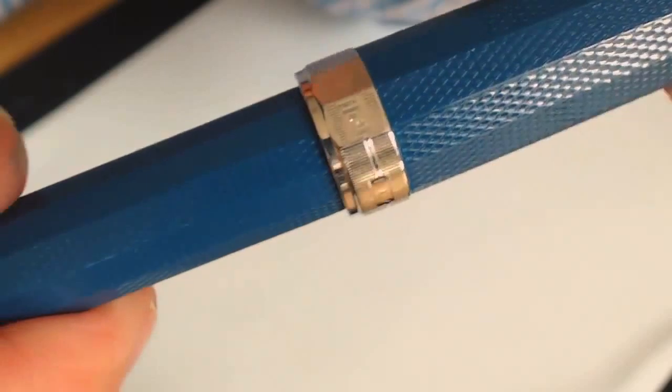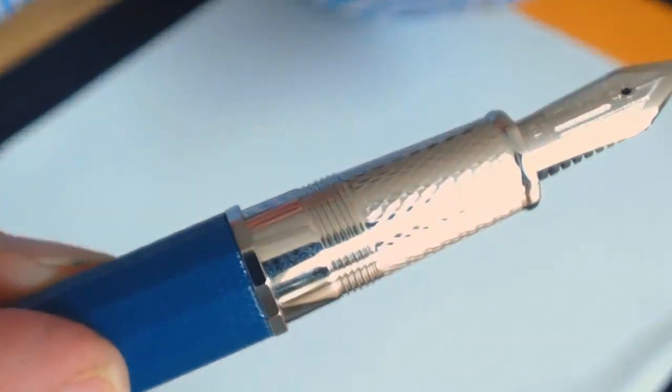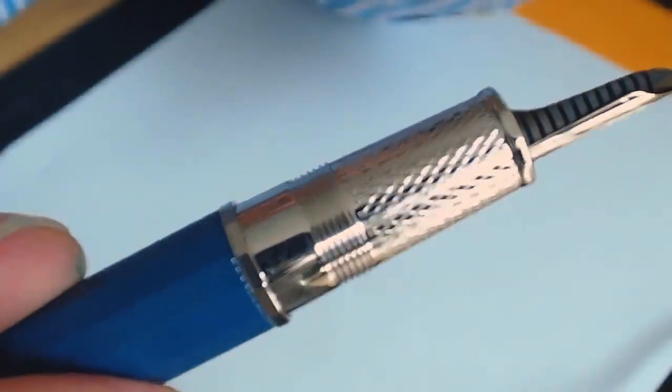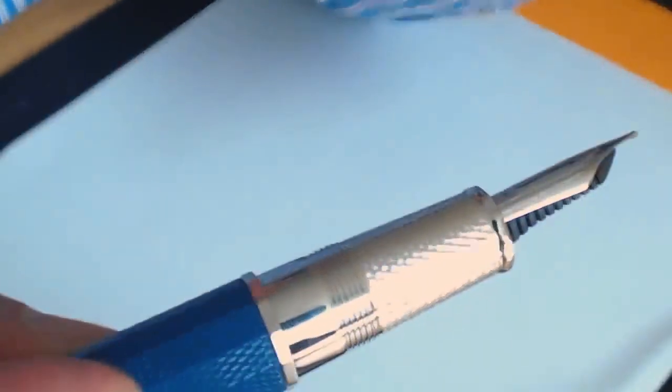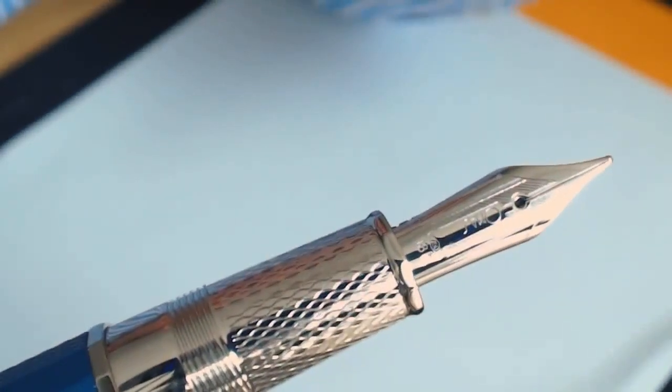The other thing that's very different from Milord is the metal section, and again in classic Omas style, there's been a lot of very nice work done around the metal—beautiful engraving there—and the nib is, of course, a classic, absolutely beautiful.